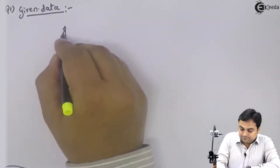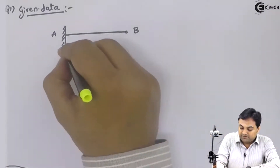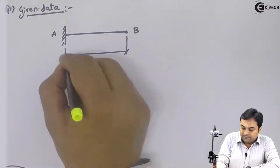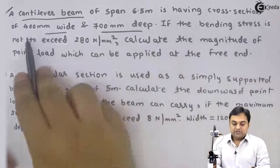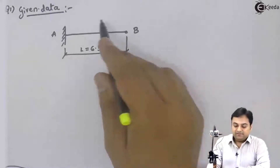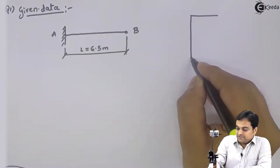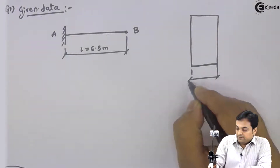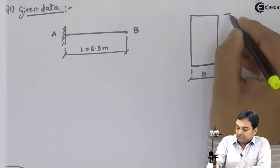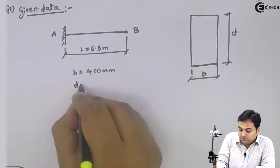The length of beam is 6.5 meters. I will draw a cantilever beam — you can say it is beam AB with length equal to 6.5 meters. The cross section of this cantilever beam is a rectangle having width B as 400 mm and depth D as 700 mm.